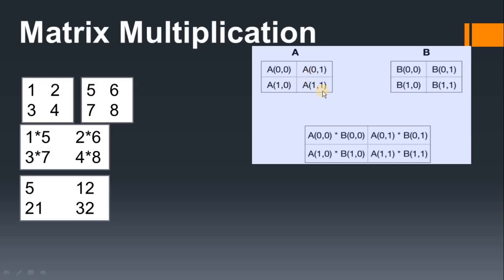As a beginner, remember this for the second matrix as well. The first position starts at zero-zero. When you shift to the next value in the same row, the column value changes. When you change the row, the first index value changes. Using this index notation, the multiplication works like: a[0][0] is 1 and b[0][0] is 5, so 1 multiplied by 5 equals 5.